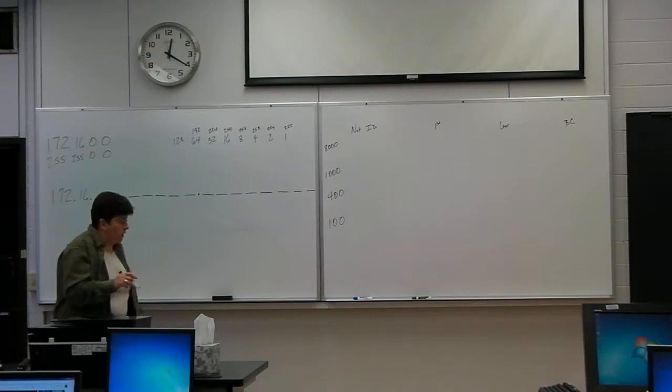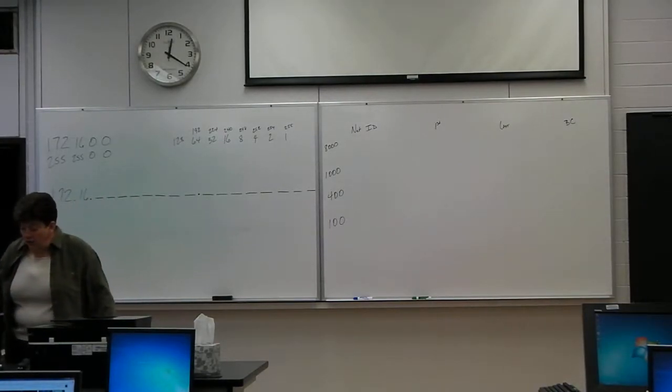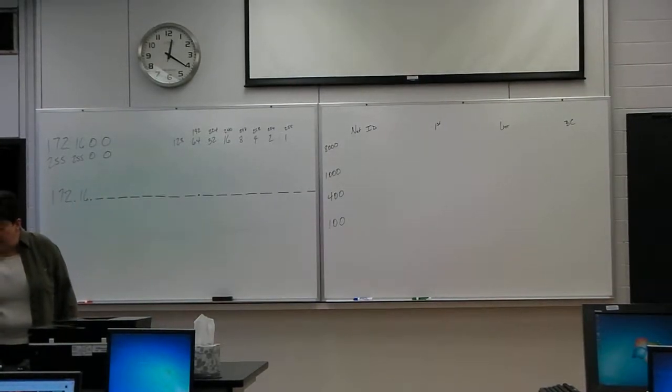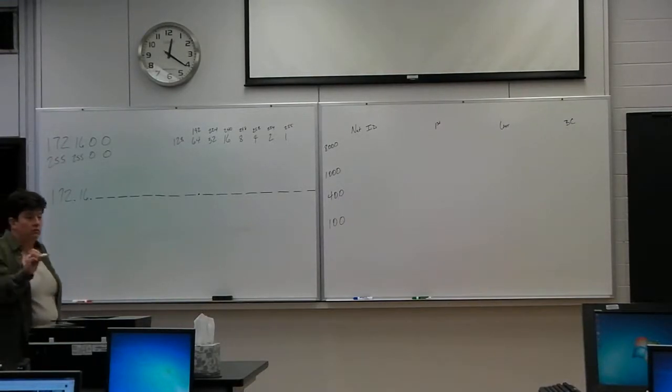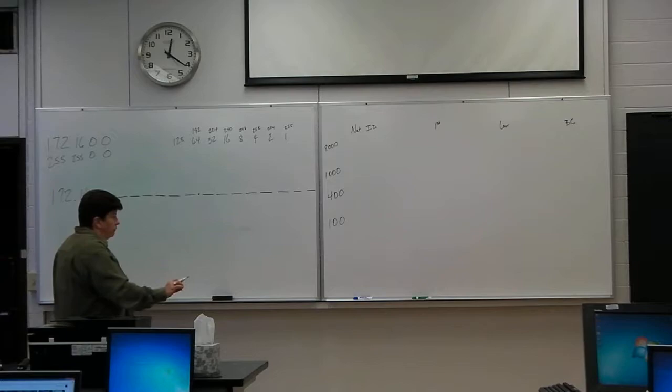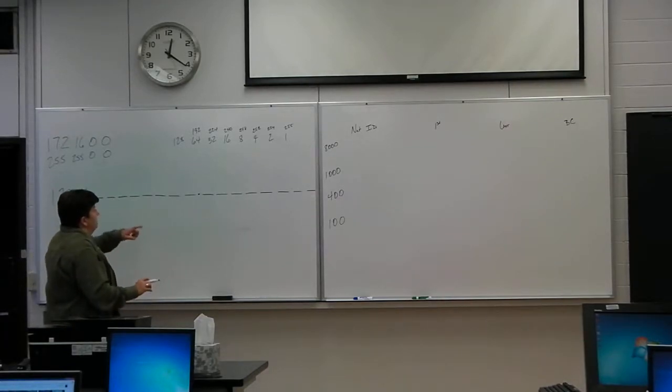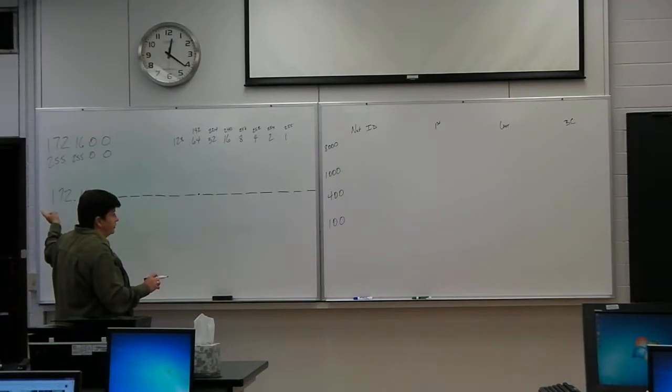So our first question becomes I want a network that has 8,000 hosts. So we've got to figure out how many bits it takes to do that. For the most part your cookbook on this remains the same. All the steps that you did for calculating the number of hosts in the network, do the same thing. So your cookbook remains. But I've got to figure out how many bits to write the number 8,000, which means I need to extend this number line.